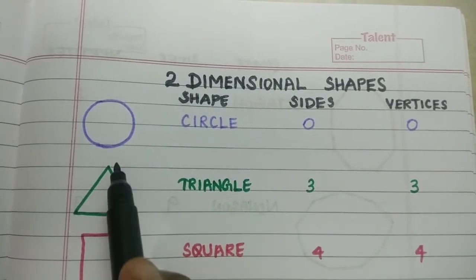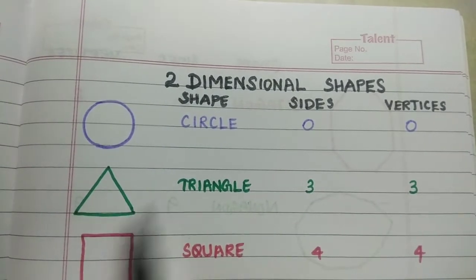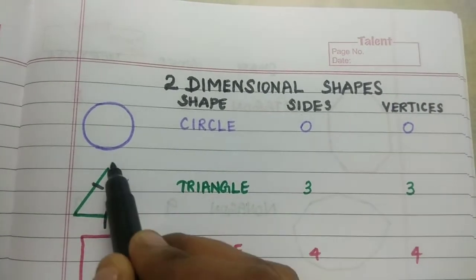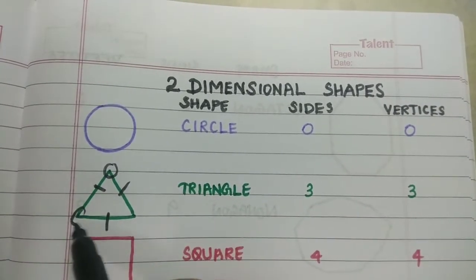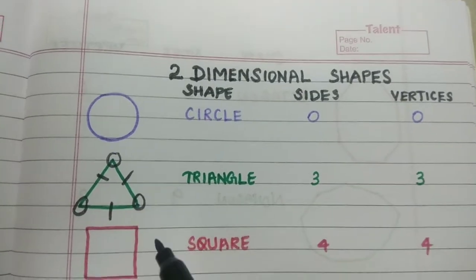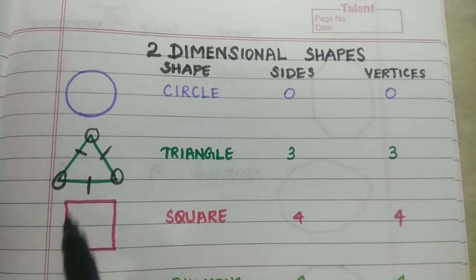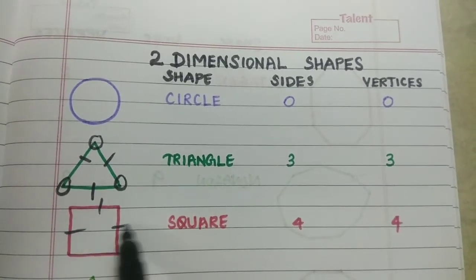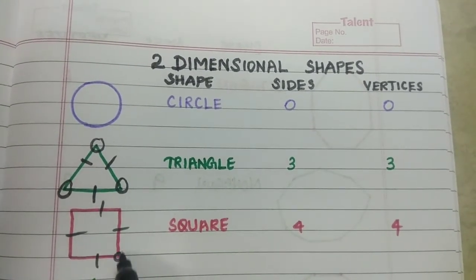Next, let's learn what is a triangle. A triangle has three sides and three vertices. Next is a square. A square has four sides and four vertices.